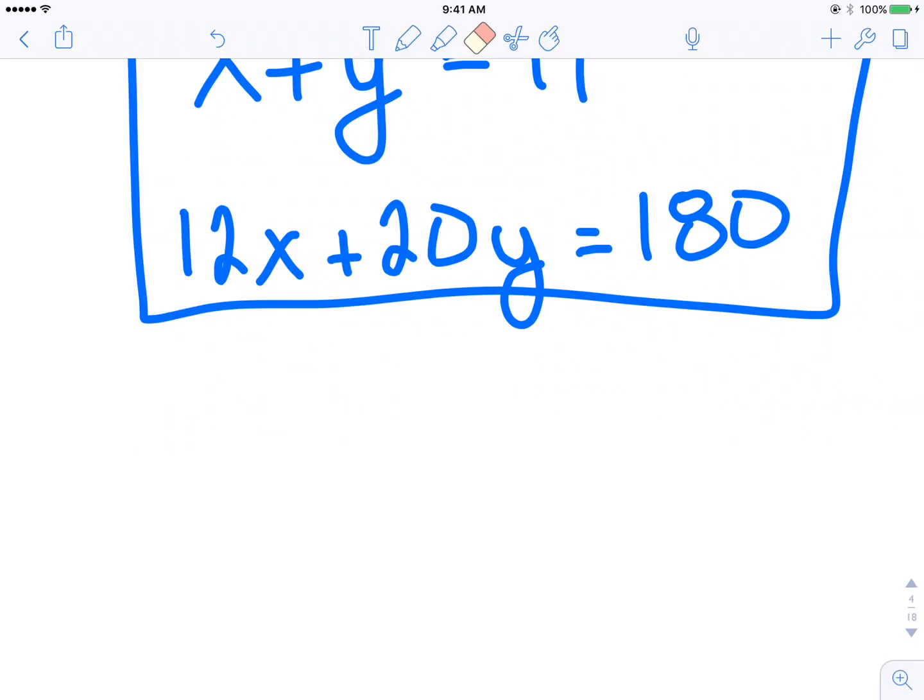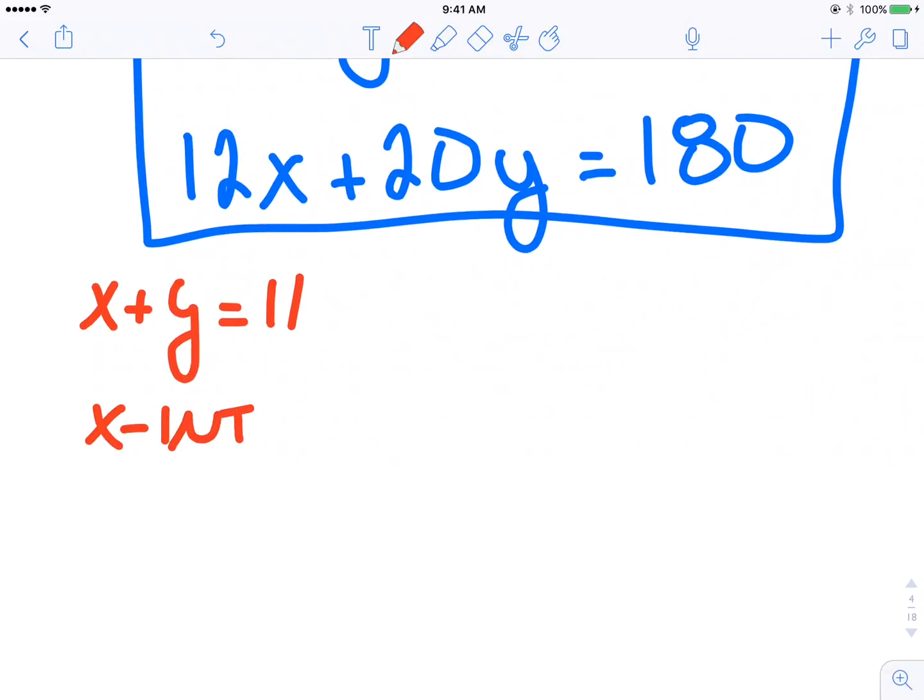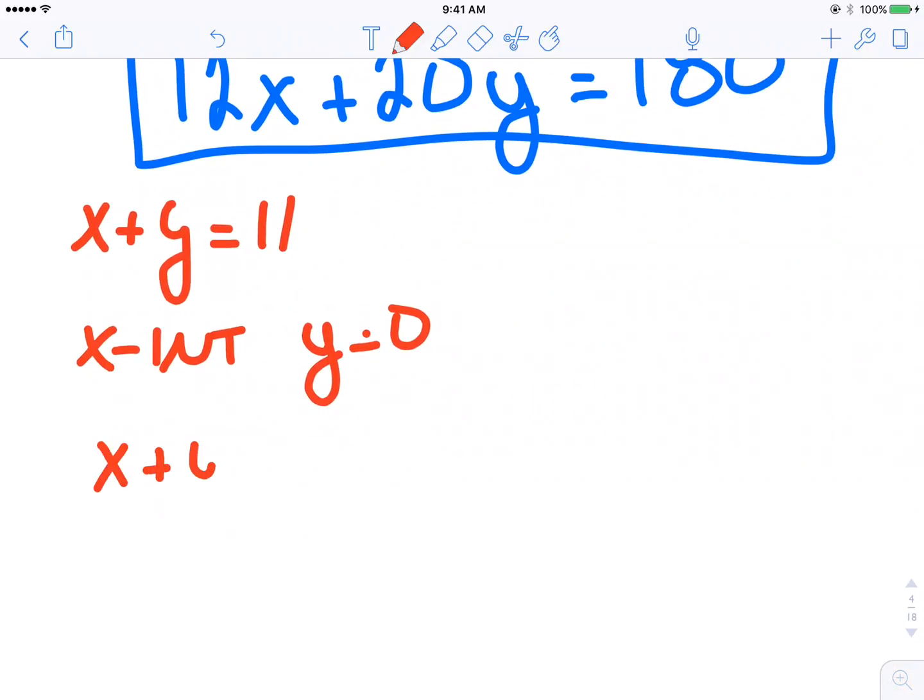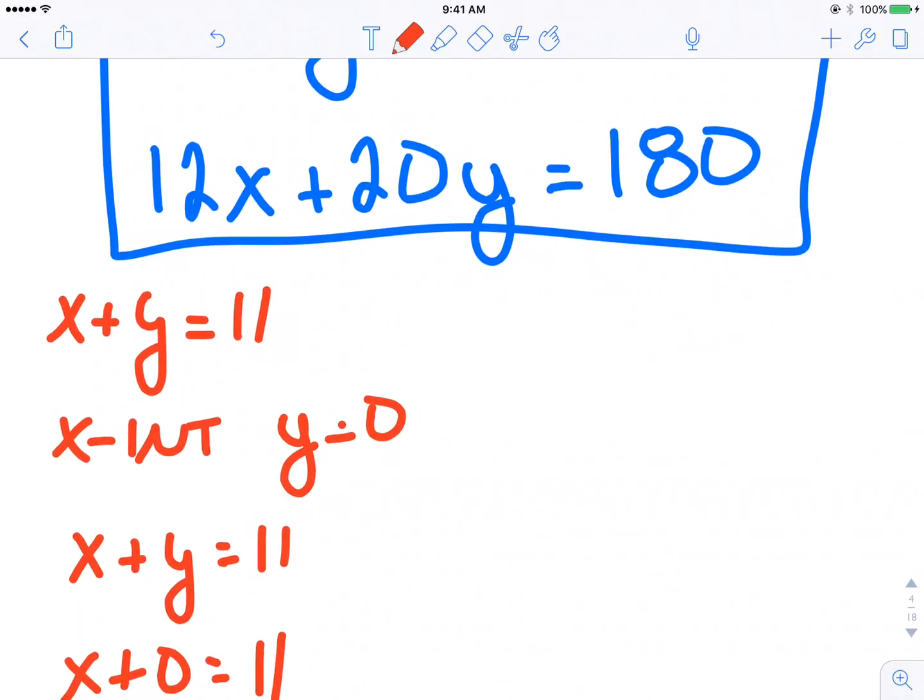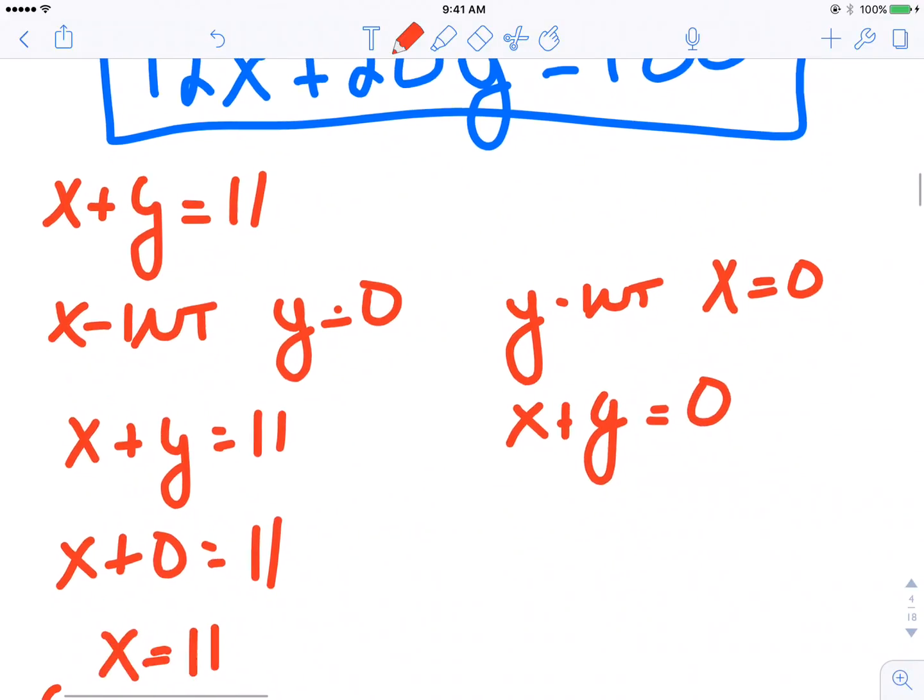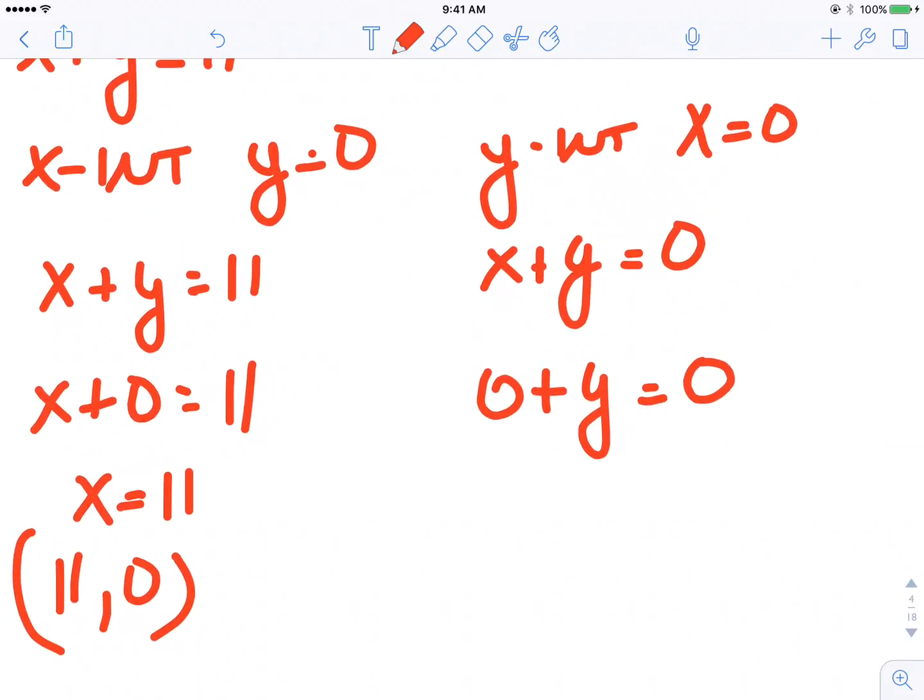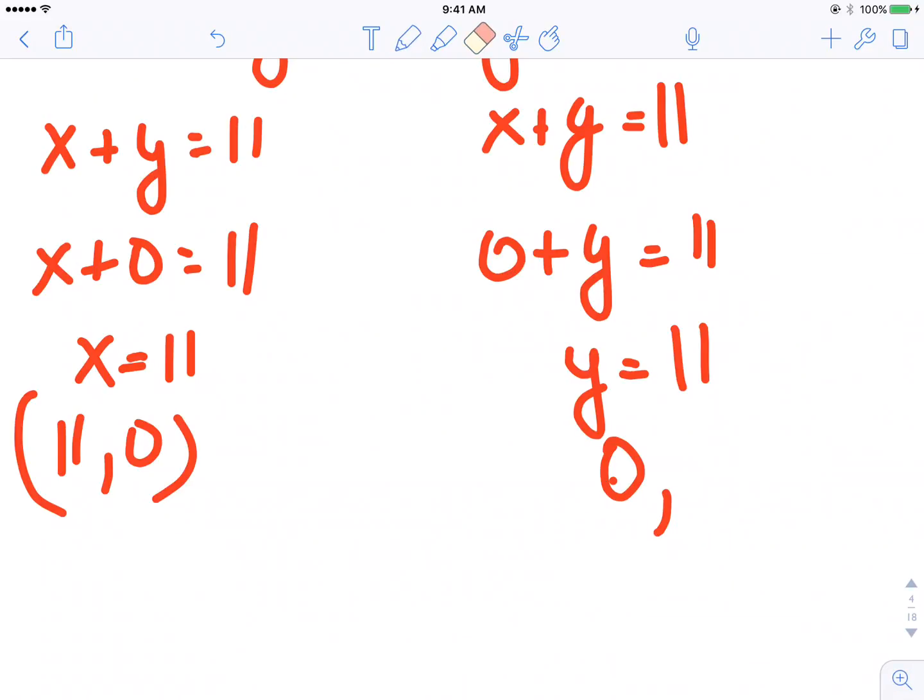Here's my first equation, X plus Y equals 11. For my X intercept I make Y equal to 0, so X plus 0 equals 11, giving me X equals 11, a coordinate point of 11 comma 0. For my Y intercept, X is going to be 0. Wait, this isn't X plus Y equals 0, this is X plus Y equals 11, so 0 plus Y equals 11, Y equals 11, giving me a coordinate value of 0 comma 11.